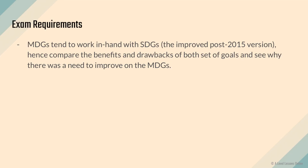Consider why there was a need to create the SDGs — essentially why there was a need to improve on the MDGs. The main reason is that the MDGs did not manage to help less developed countries succeed, and they missed certain aspects of overall sustainable development. The SDGs have been quite successful thus far and are on route to succeeding by 2030 — they are more comprehensive and ensure less developed nations are being addressed.